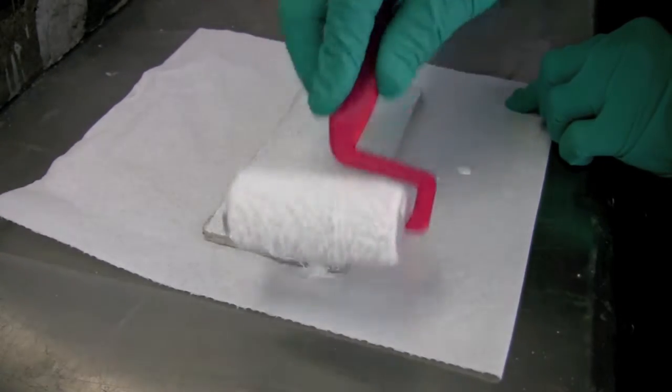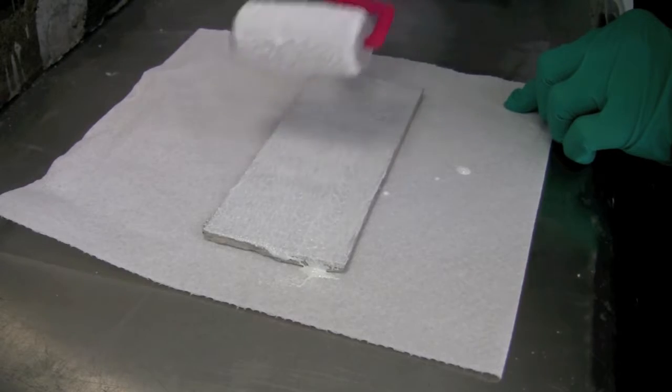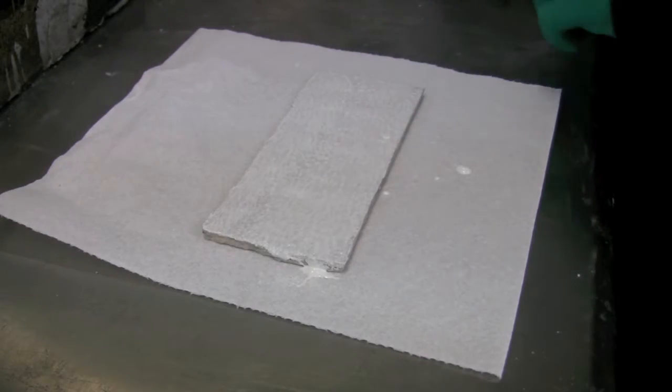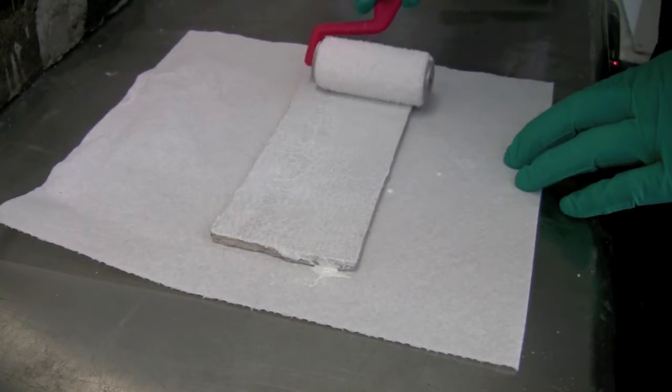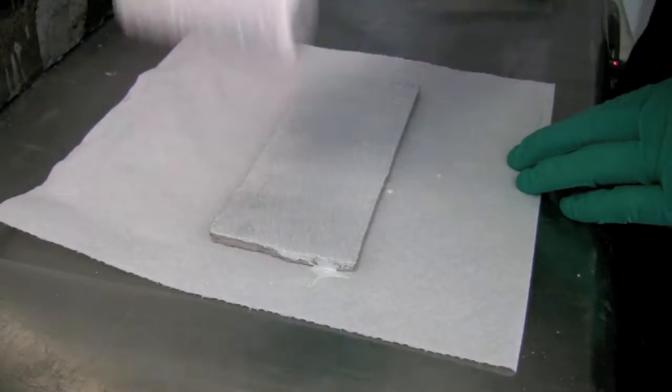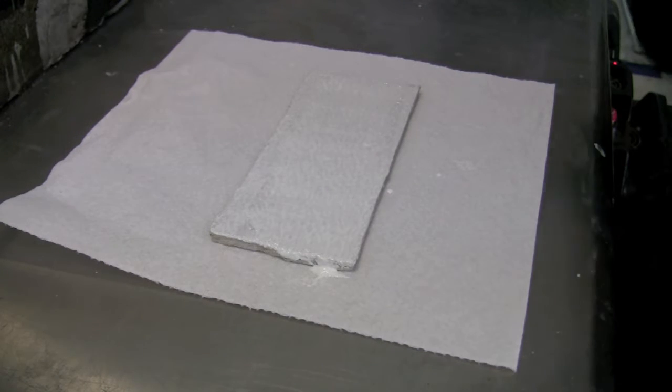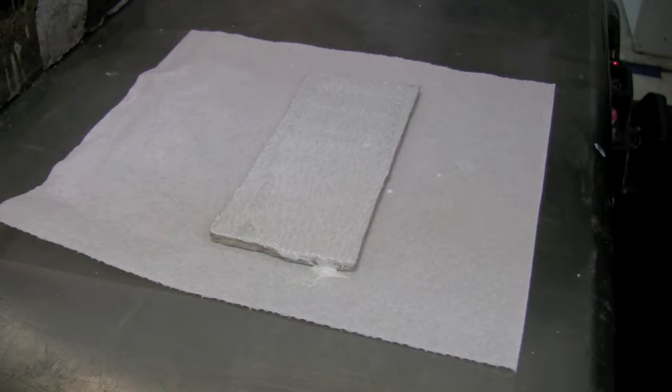First, we take an epoxy base coating and apply it to the backer board representing the concrete. Then we take a salt shaker with luminescent particles in it and sparingly sprinkle those onto the epoxy coating.